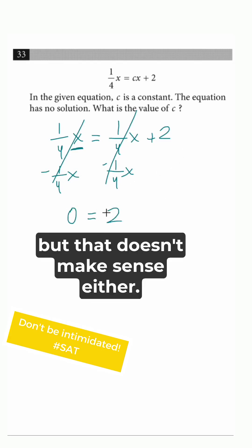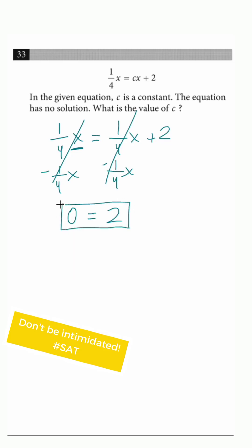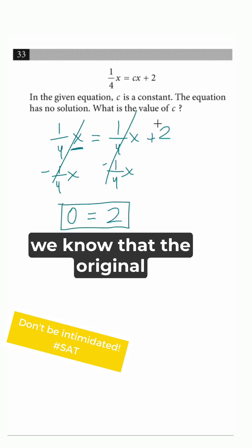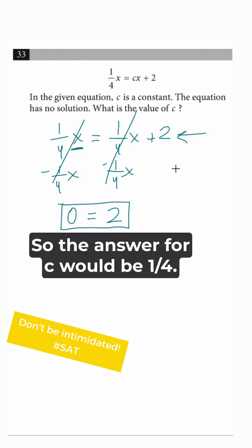But that doesn't make sense either. Anytime we have an equation like this that's not true, we know that the original equation had no solution. So the answer for c would be 1 fourth.